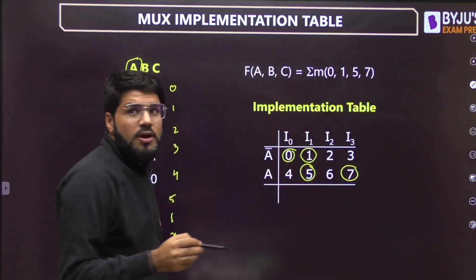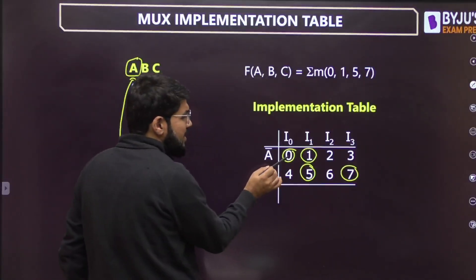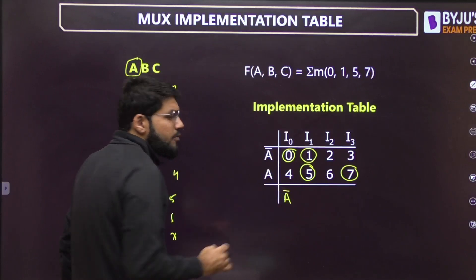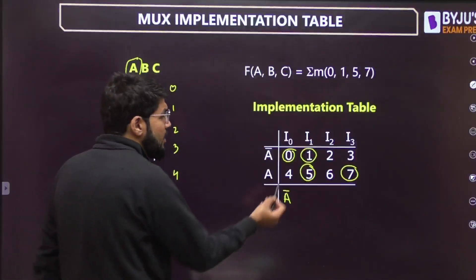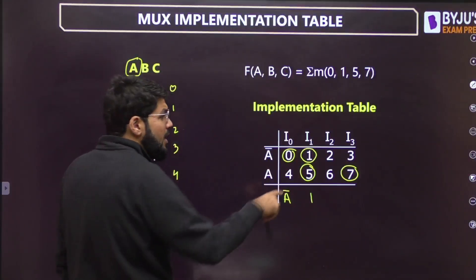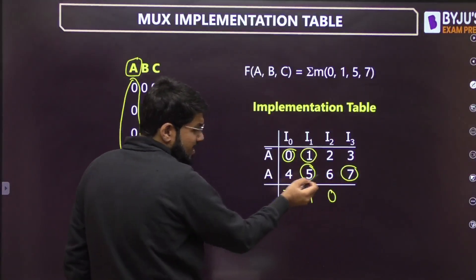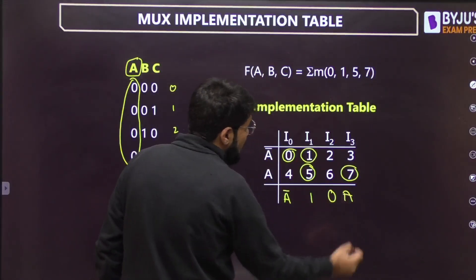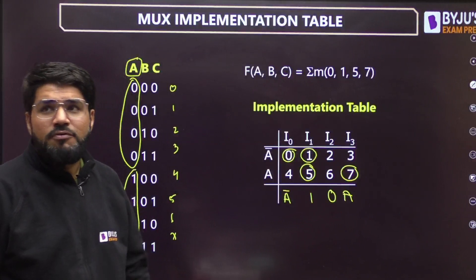Now do a column-by-column analysis. In the first column, only one circle is there corresponding to A-bar, so input line I0 will be A-bar. When both rows are circled, that means A-bar + A = 1. When nothing is circled, the input is 0. When there is a circle only in the second row corresponding to A, the input line connects to A.